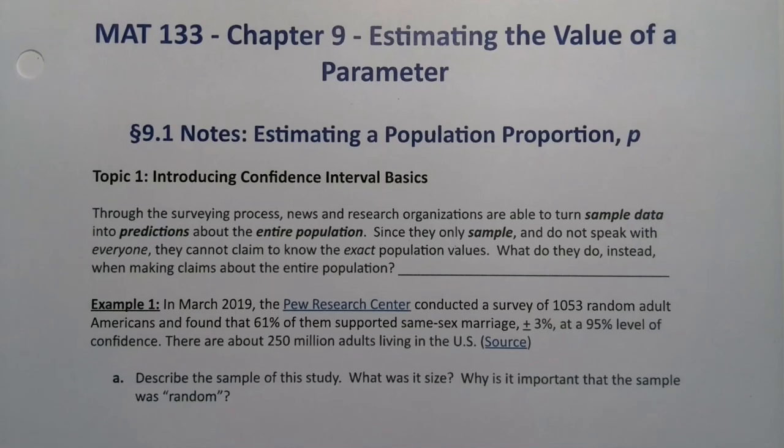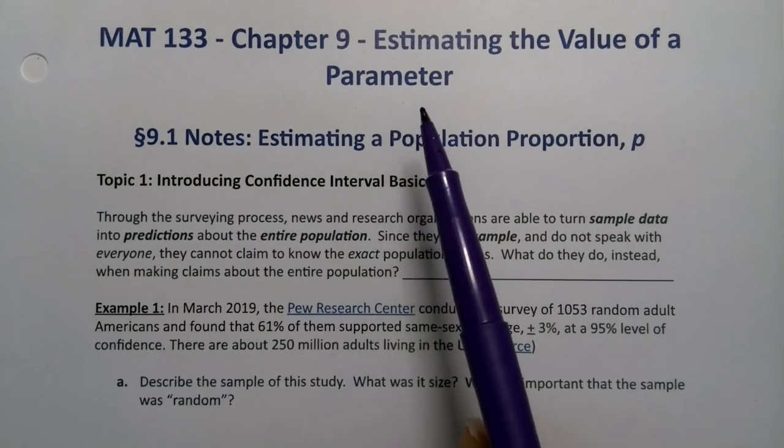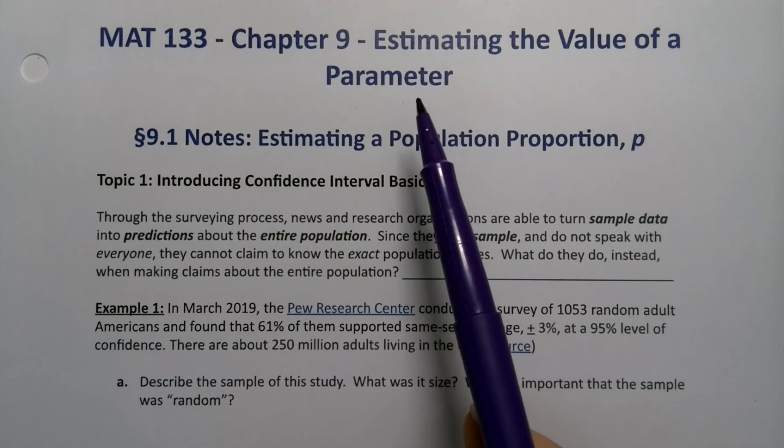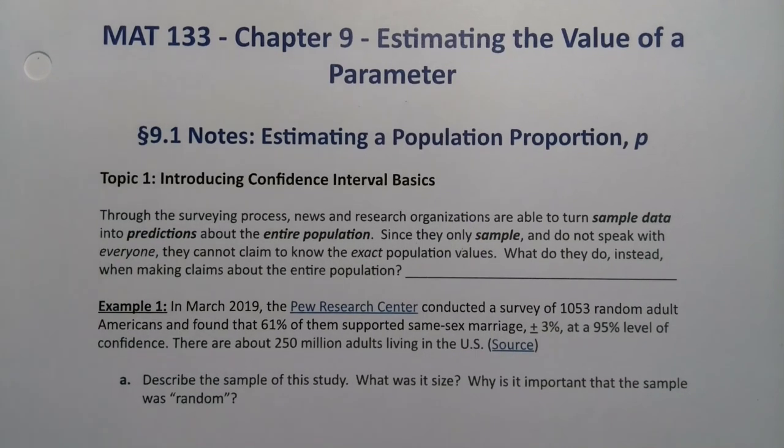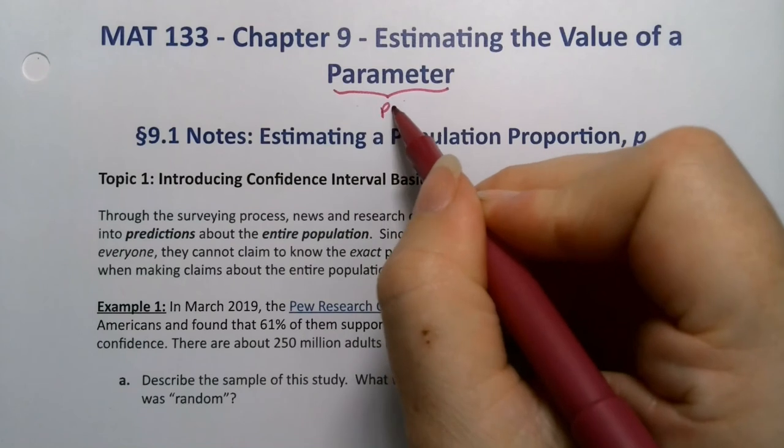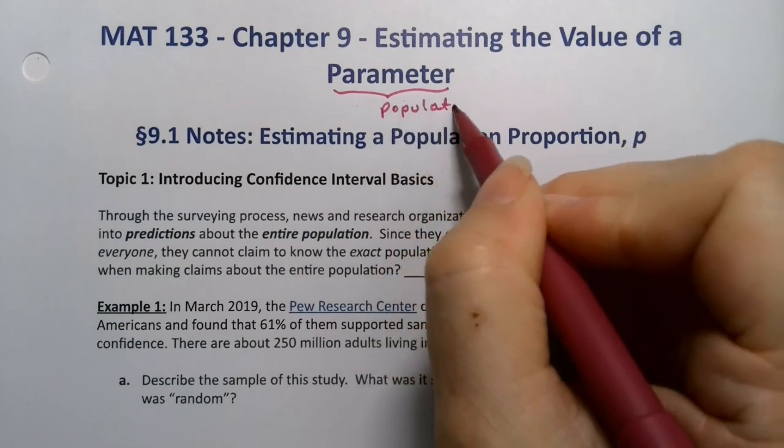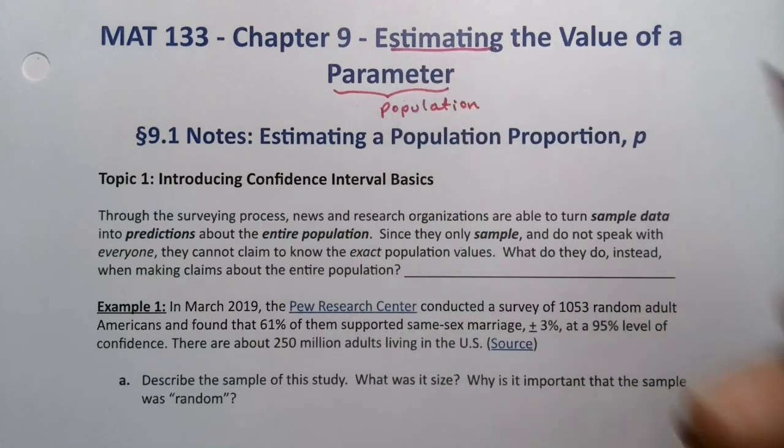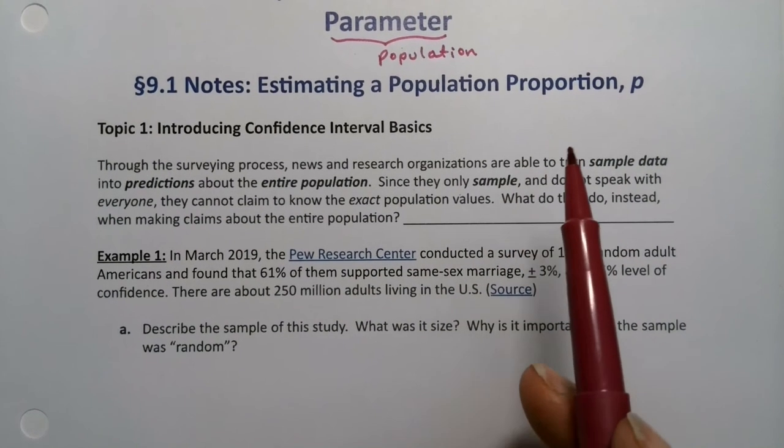In Chapter 9, we're going to make our first really big leap into inferential statistics. Chapter 9 is all about confidence intervals. You're estimating the value of a parameter, and we're going to be working with the population proportion.